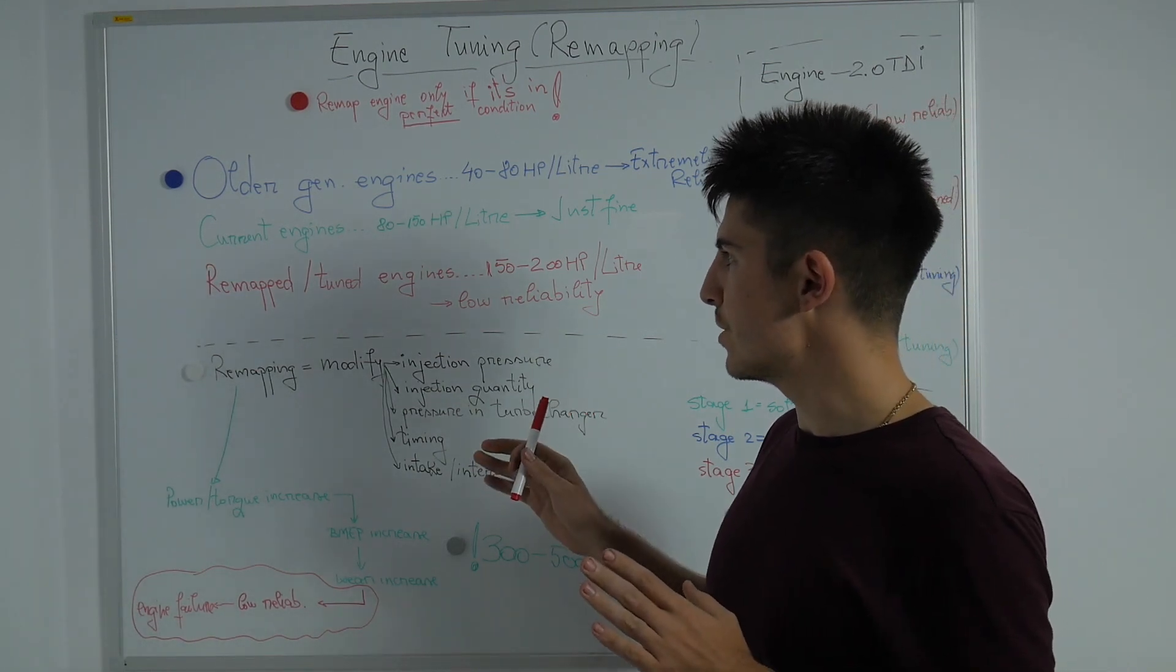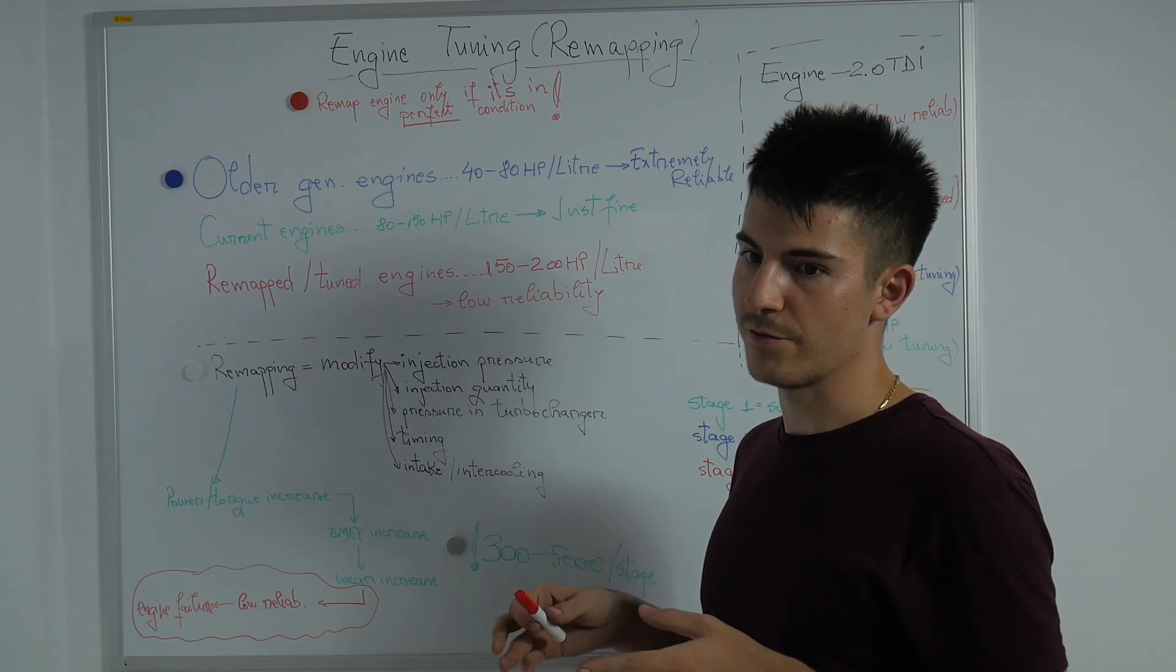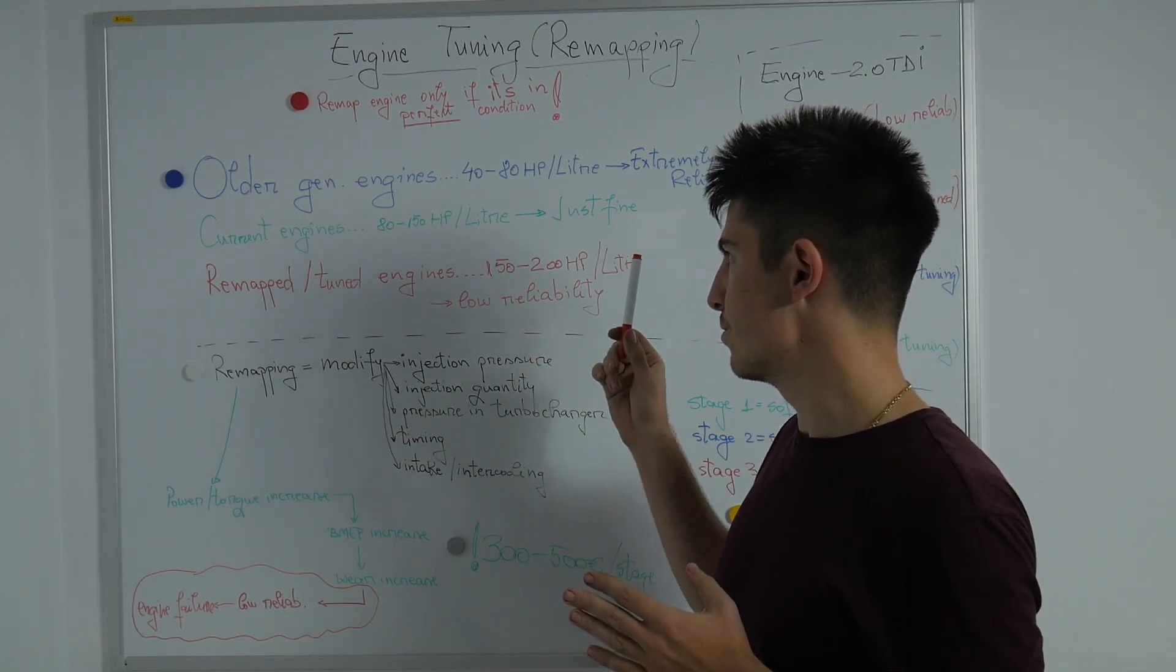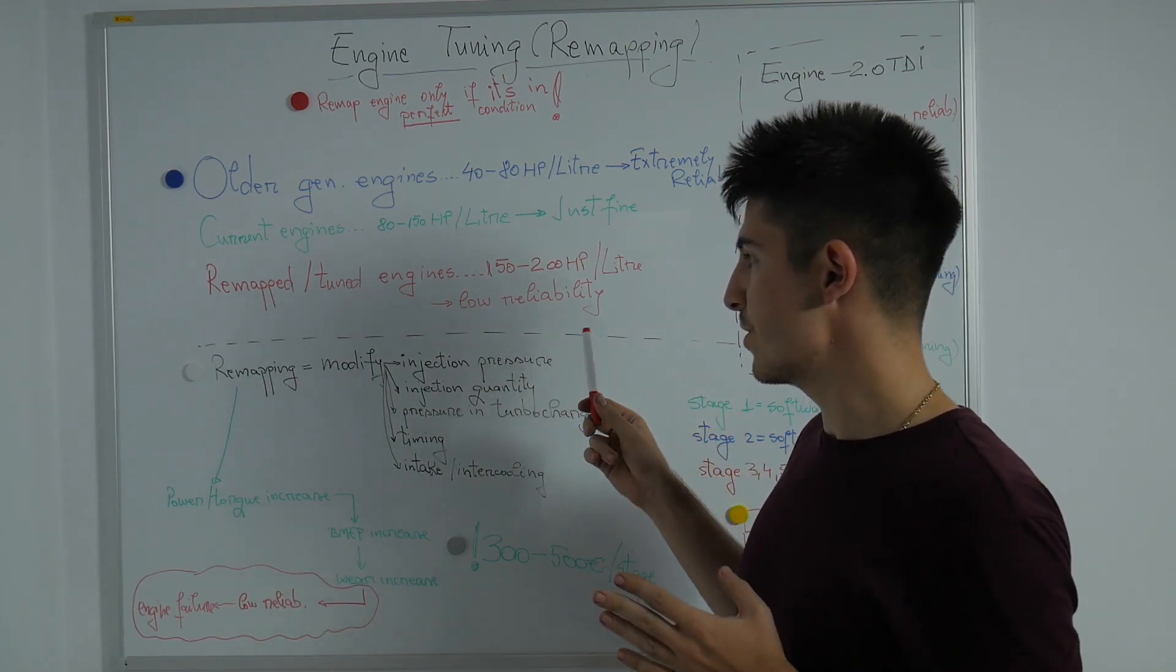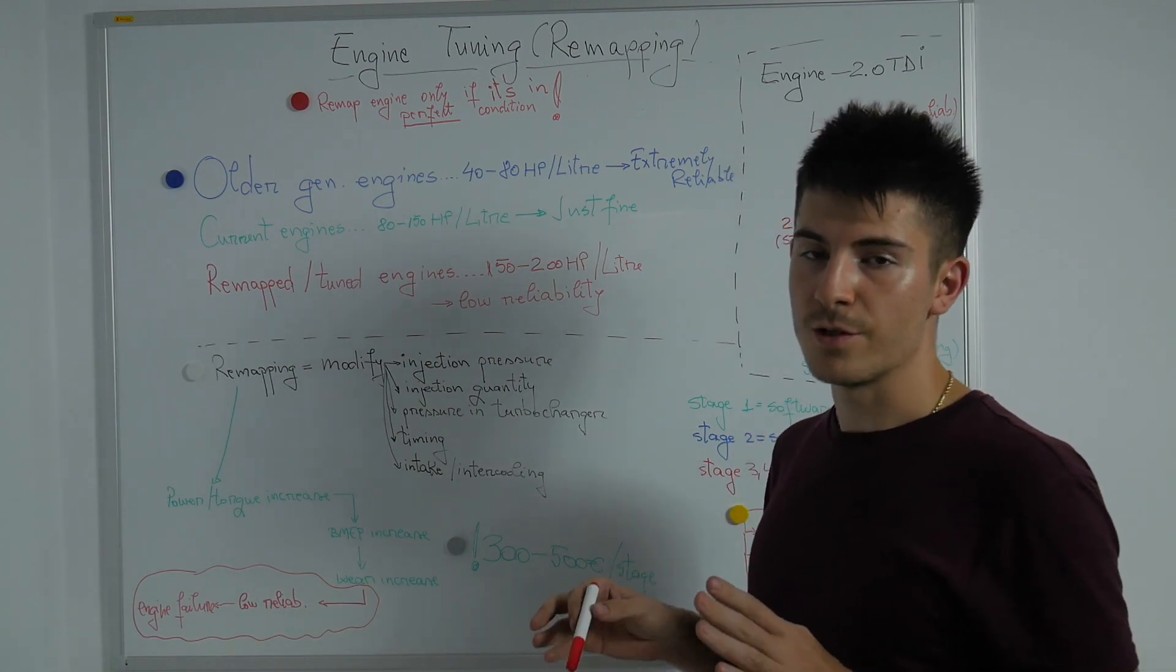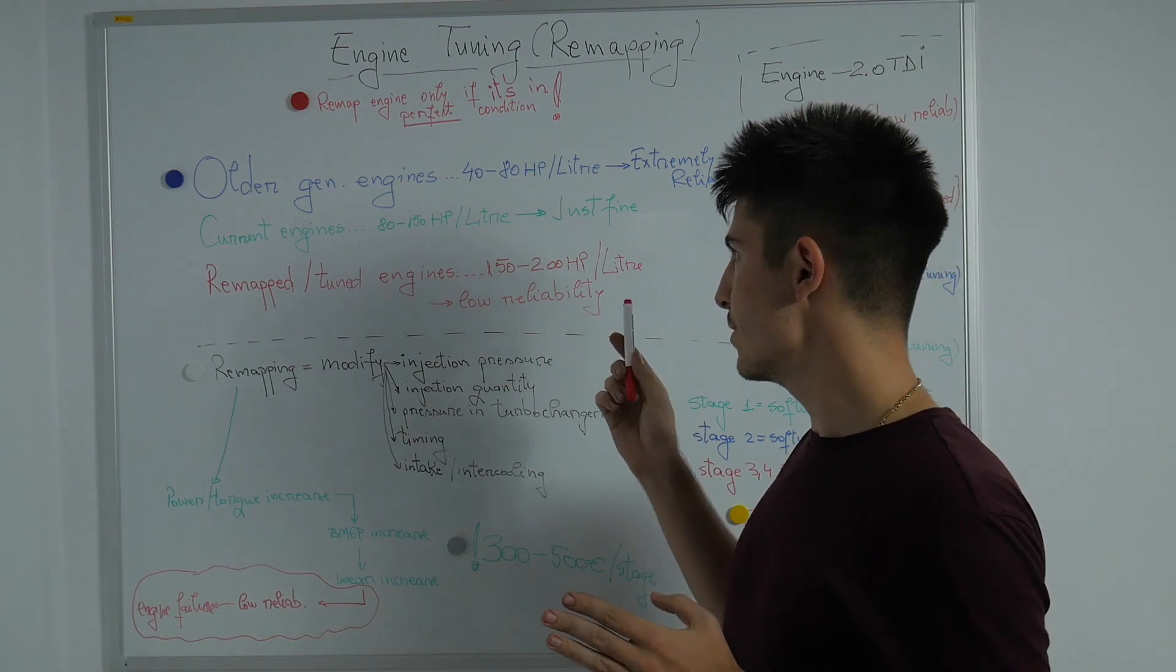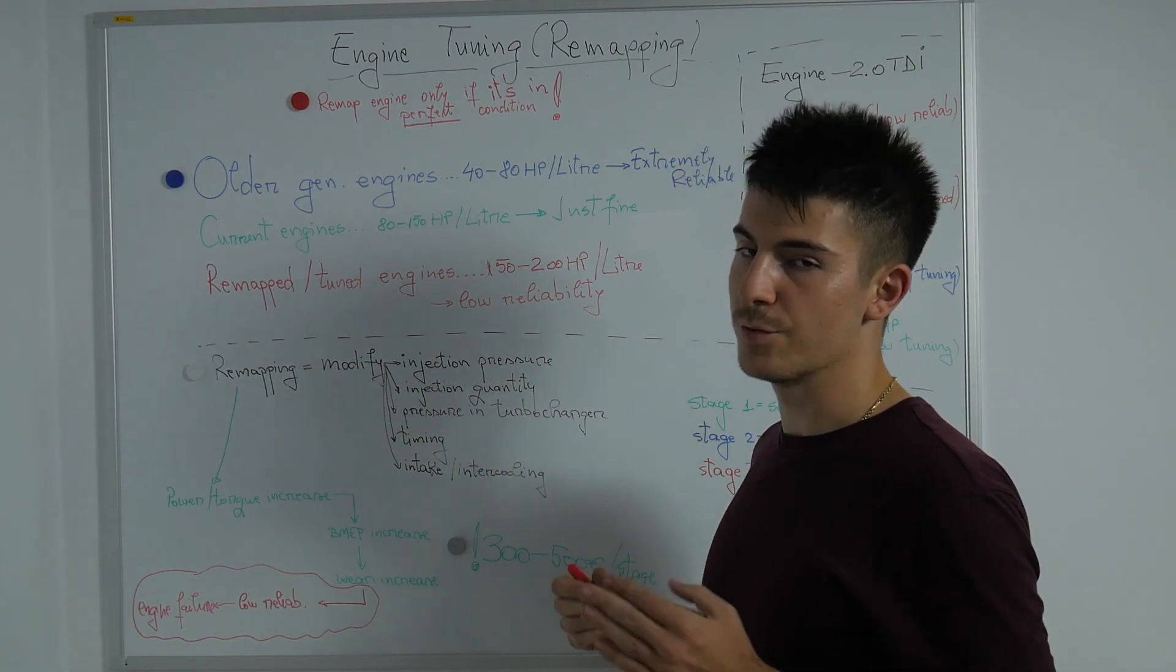And remapped and tuned engines, whether they're made by a manufacturer or by yourself by tinkering the engine, are anywhere from 150 to 200 horsepower per liter which will result eventually in low reliability. That's a small summary for power to displacement. The more power you get per liter out of an engine, the less reliable it will be.